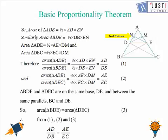Similarly, area of triangle BDE will also be equal to half base into height. Here base is BD and height becomes EN. So half DB into EN.